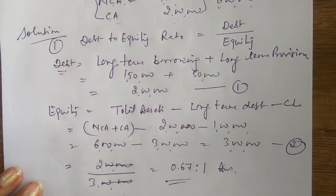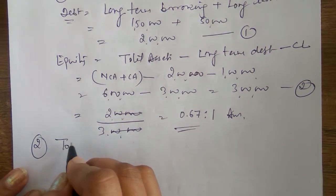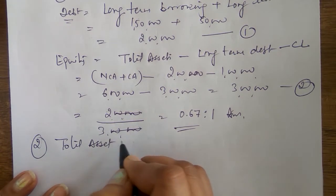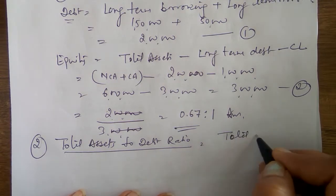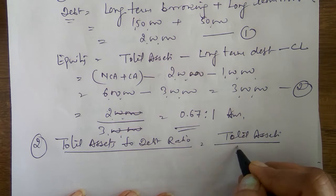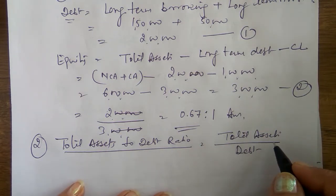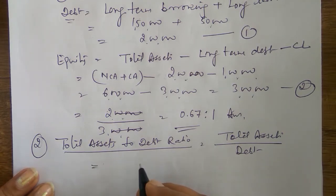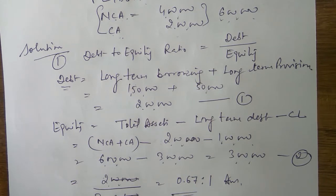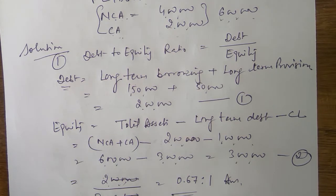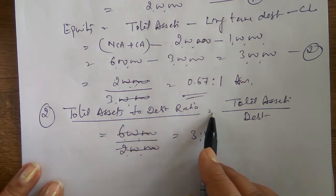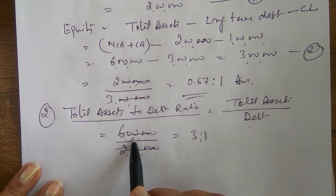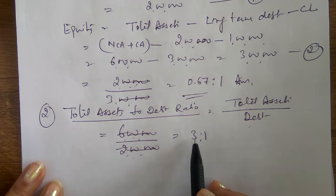Second ratio: total asset to debt ratio. Formula: total assets / debt. Total assets already calculated = ₹6,00,000. Debt = ₹2,00,000. So total asset to debt ratio = ₹6,00,000 / ₹2,00,000 = 3 : 1.